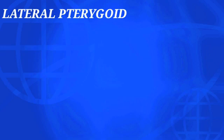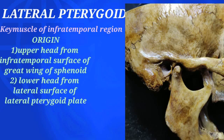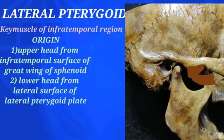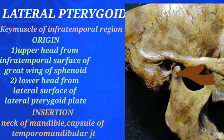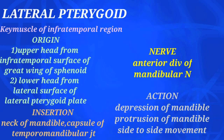The lateral pterygoid is considered the key muscle of the infratemporal region because it divides the maxillary artery into three parts. It arises as two heads: the upper head from the infratemporal surface of the greater wing of the sphenoid, and the lower head from the lateral surface of the lateral pterygoid plate. Both heads pass backwards and laterally, converging into a tendon that inserts into a depression in front of the neck of the mandible and partly into the capsule of the temporomandibular joint. It is supplied by the anterior division of the mandibular nerve. Its main action is depression of the mandible (opening of mouth); combined with medial pterygoid, it also causes protrusion and side-to-side chewing movement.